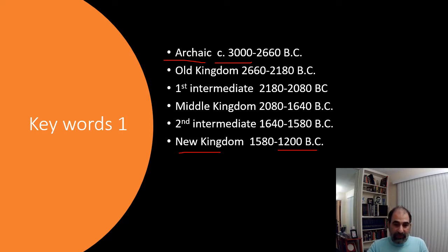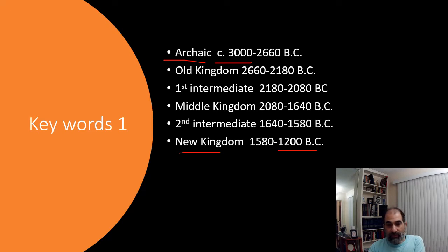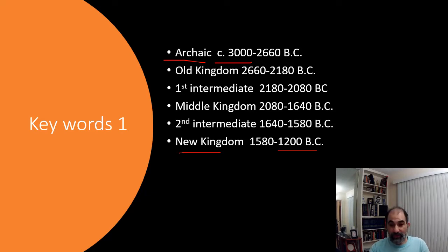Go ahead and get all this down if you haven't yet. You want to know all the different characteristics of each time period and what happens. I'll give you the names of some pharaohs, but that'll be more when we get to the New Kingdom. Before we get to the Archaic Period, the first thing we need to talk about is geography — just like geography was important in Mesopotamia.